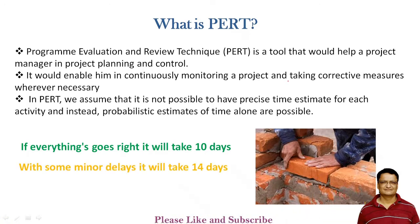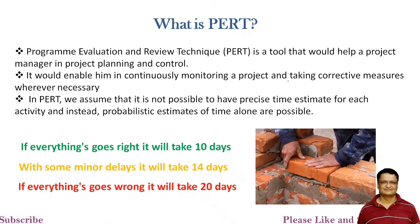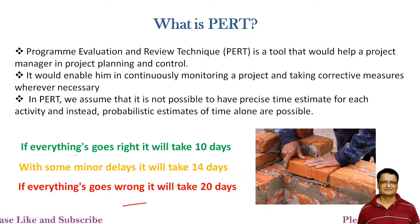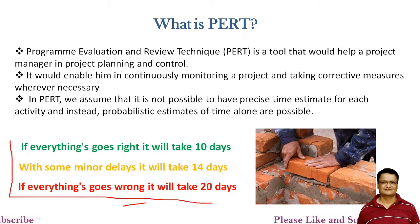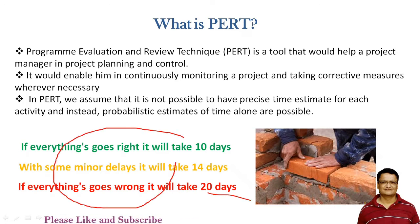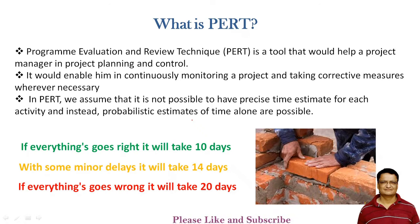Let us assume there are certain delays — the material is delayed, labor is delayed, and due to other factors, it may take 14 days. And in the worst case, if everything goes wrong and you have challenges in material, labor, and other things, it may take 20 days. This is your probabilistic estimation. We are not saying the activity will exactly take 10 or 14 days; we have some probability of completing the given activity. This particular estimate is called a probabilistic estimate, and PERT makes use of this kind of estimate.